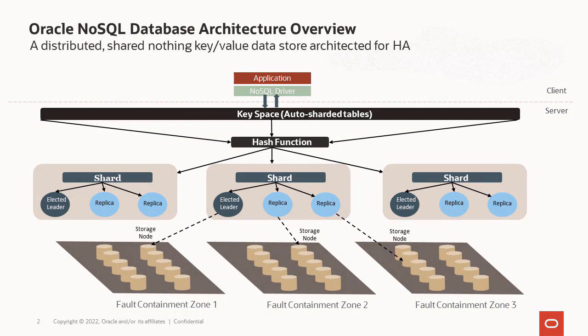To start with, it's always good to have a little architecture diagram. This architecture works basically equally well for our cloud service as well as our on-premise product. Starting from the bottom, a NoSQL cluster — we use various terms to describe it — basically starts with a bunch of hardware layered across different fault containment zones. That helps drive our high availability. We like to use commodity hardware, stuff that you can get off the shelf. We work equally well whether you use large machines divided into VMs or smaller bare metal machines.